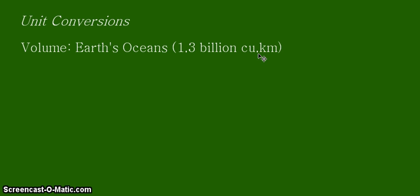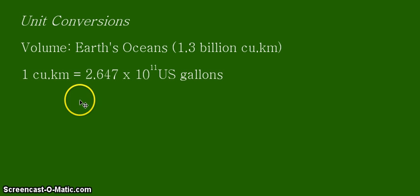So, our task for this video tutorial is to convert this unit cubic kilometers into the unit gallons. All right, so we start with our equivalent statement. Okay, so according to our research, 1 cubic kilometer is equal to 2.647 times 10 raised to the power of positive 11 U.S. gallons. Now, remember, we are using here the U.S. gallons as our reference.